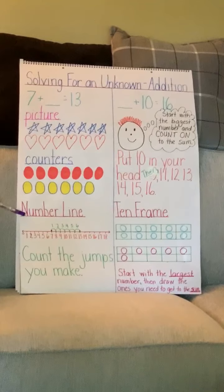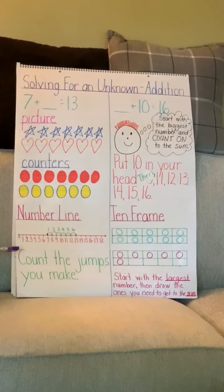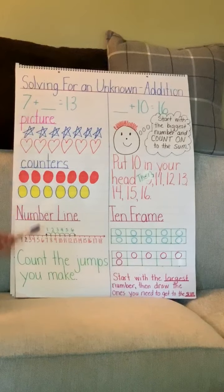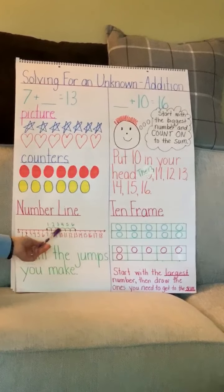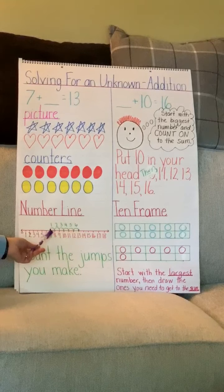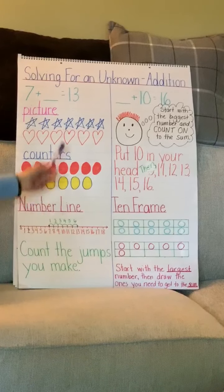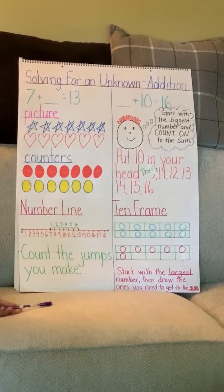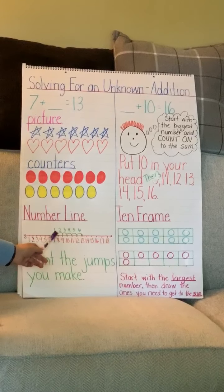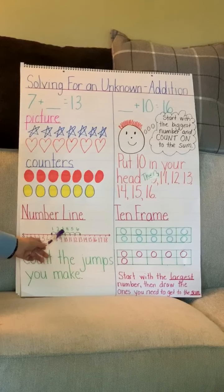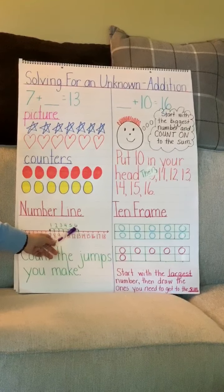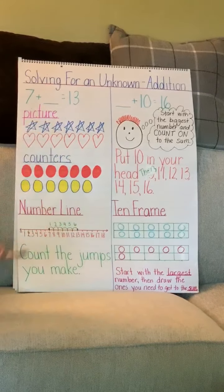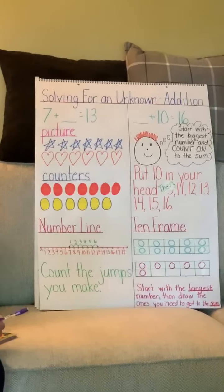A third way to solve for this unknown is using a number line. We start at 7 and count the jumps we make — not the numbers, but the jumps. We jump until we get to our sum of 13: 1, 2, 3, 4, 5, 6. Our answer again is 6. Make sure you're just counting the jumps that you make.